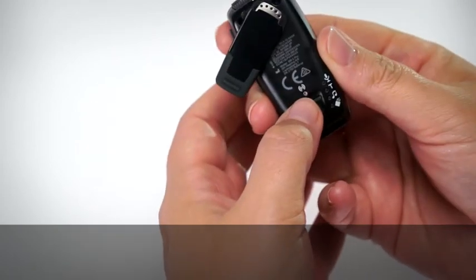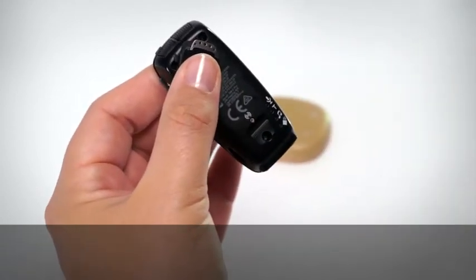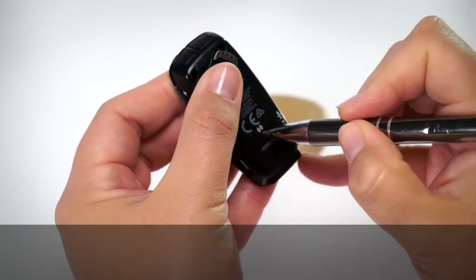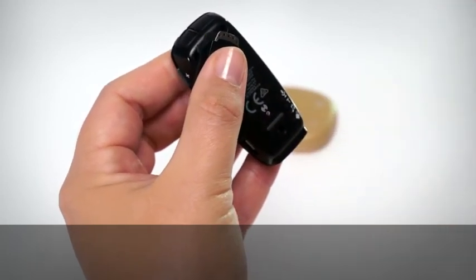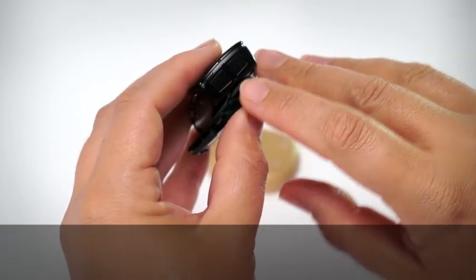Use a pen to press the pairing button once. The light on top of the Mini Microphone 2 Plus flashes orange for 20 seconds.